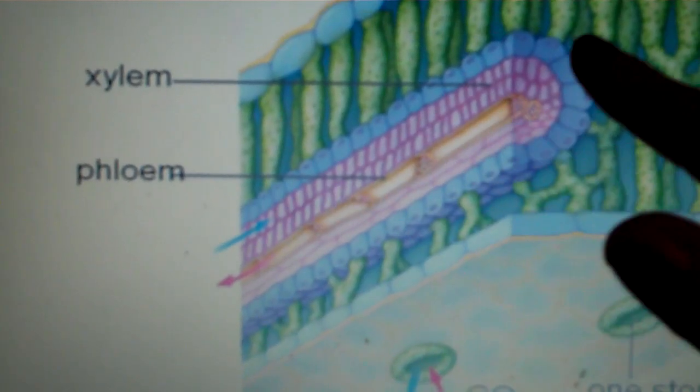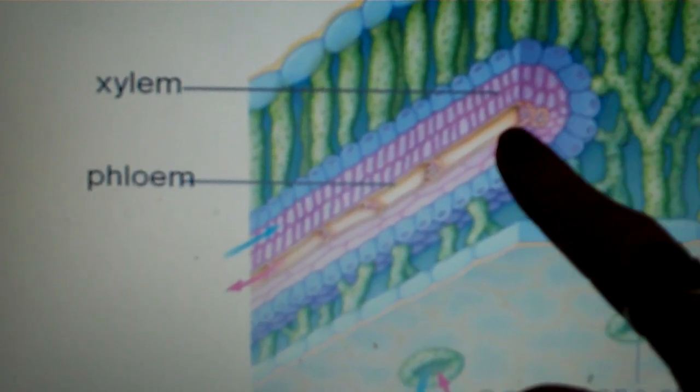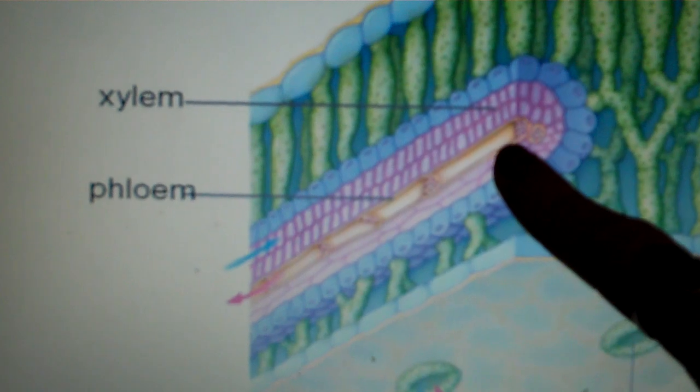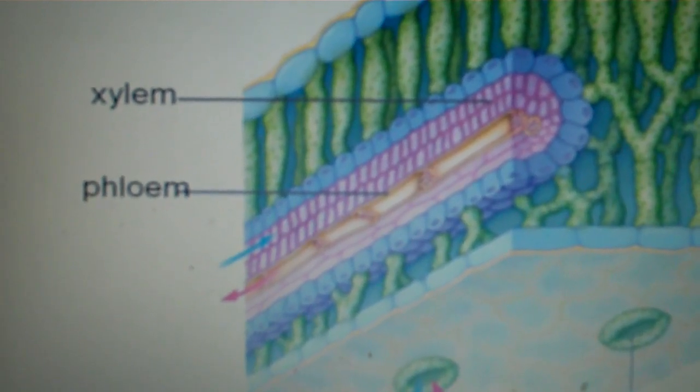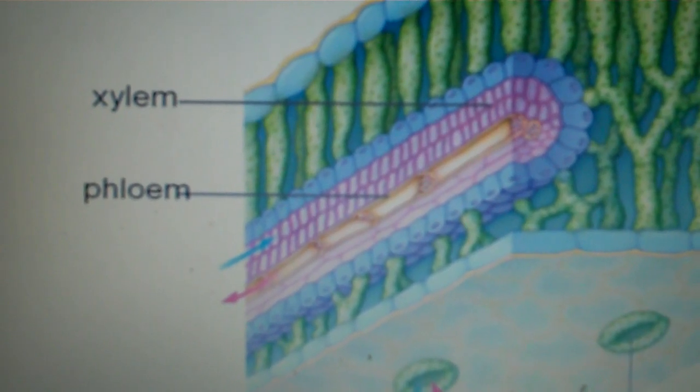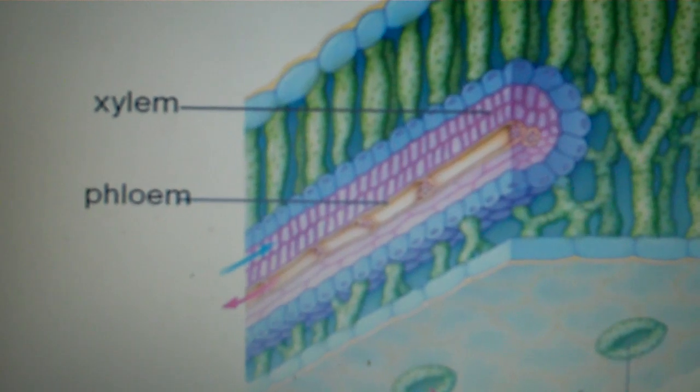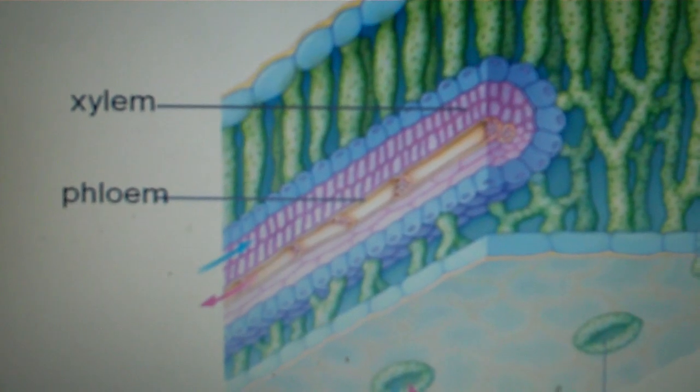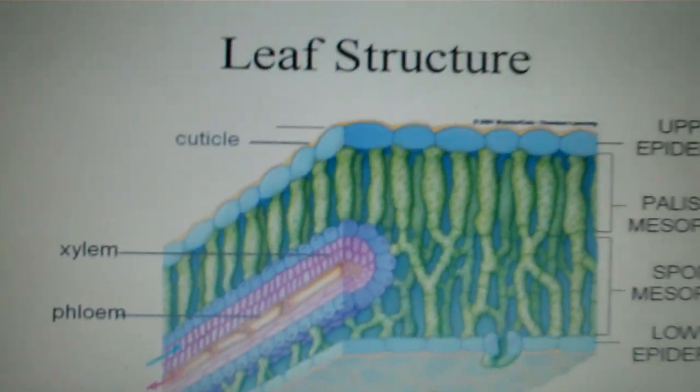So the xylem can transport water to the leaf. And then phloem can be there to remove some of the sugar that's made during photosynthesis and transport it to where the plant needs, which we'll discuss in another section.